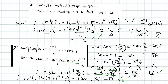Let us look at problem number 5. We need to find the value of tan inverse of 2 sin of 2 cos inverse of root 3 by 2. Starting from the innermost parenthesis, let cos inverse of root 3 by 2 equal x. This implies cos x equals root 3 by 2, which gives x equal to pi by 6 radian.